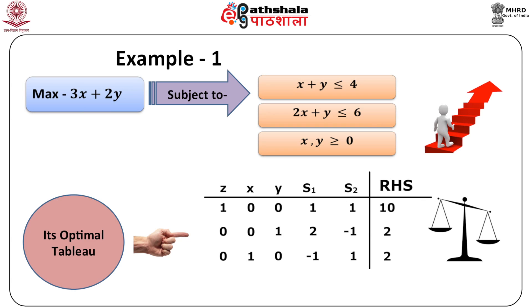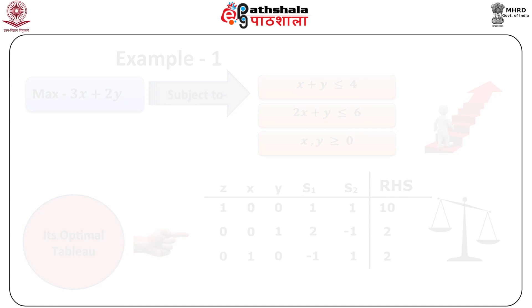Example 1. Maximize 3x plus 2y subject to x plus y is less than or equal to 4, and 2x plus y is less than or equal to 6, where x and y are both greater than or equal to 0. The problem has the following optimal tableau after adding s1 and s2 as slacks to place in standard form. The resulting matrix is given.